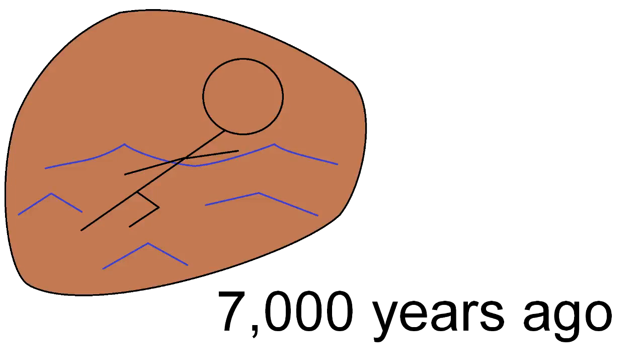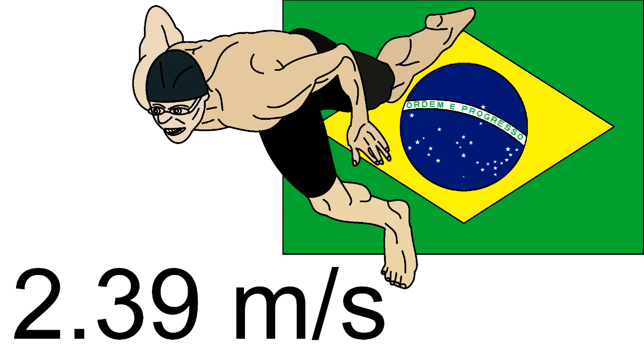The earliest evidence of human swimming are Stone Age paintings from 7,000 years ago, and competitive swimming began in Europe 200 years ago. Humans have gotten pretty good at aquatic locomotion since then, and Cesar Cielo of Brazil is currently the world's fastest swimmer, recording a speed of 2.39 meters per second in 2009.